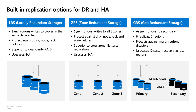Let's look at the replication options available for HA/DR solutions within the Azure platform. Azure Files supports all redundancy options offered by Azure Storage. LRS — locally redundant storage — is the default option, storing three copies of data locally in the same data center to protect against local disk, node, or rack failures. Data is replicated synchronously across all three copies, making it a zero RPO and RTO solution.